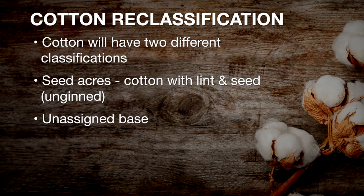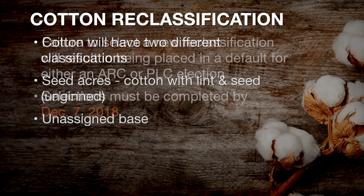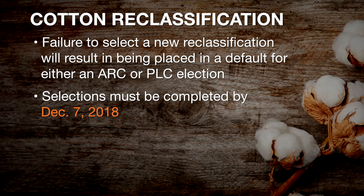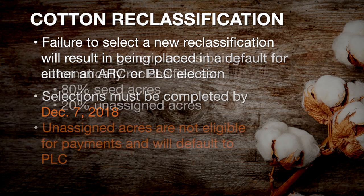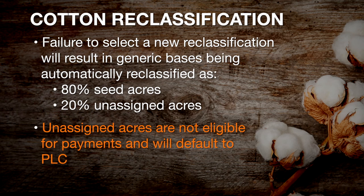Historically, cotton has had generic base acres, at least in the 2014 Farm Bill. That's actually going to go away. Now they're either going to have seed cotton acres — which is cotton with both the lint and the seed, un-ginned cotton — or it's going to become unassigned base. So producers have some important upcoming deadlines for transforming their generic base into seed cotton base, other crops base, or unassigned base. If they don't make one of these selections, they'll fall into the default, with generic base broken into 80% seed cotton, 20% unassigned, which is not eligible for payments, and they will go to the default of PLC.